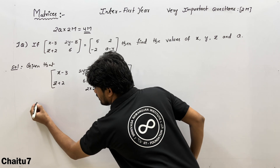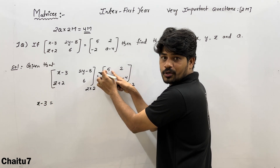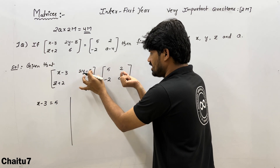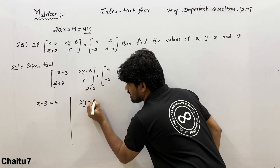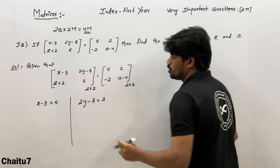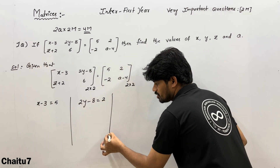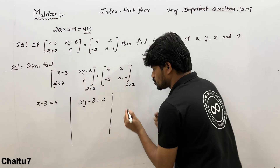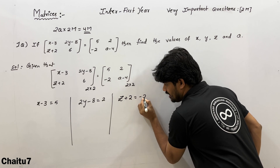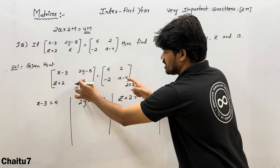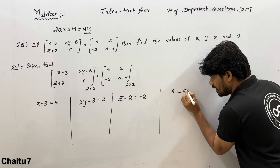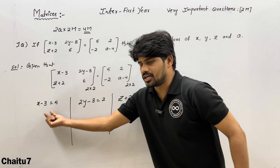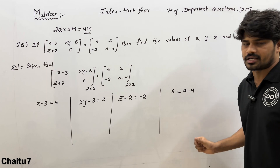First element: x − 3 = 5. Second element: 2y − 8 = 2. Third element: z + 2 = −2. Last element: 6 = a − 4. So we now find x, y, z, and a from these equations.